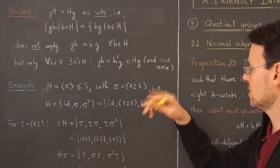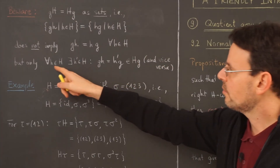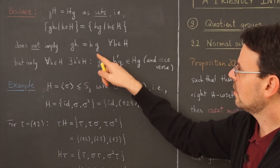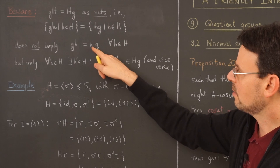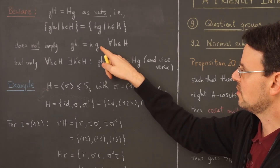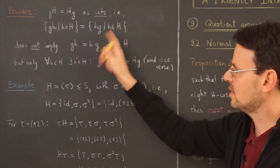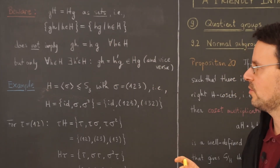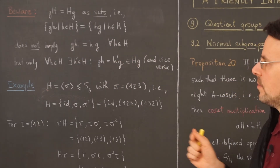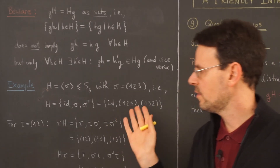Of course it can be the same h, but it doesn't have to be. Vice versa, for any h, I can find H prime such that h·g = g·h' for h' in capital H. An example will make this even clearer.